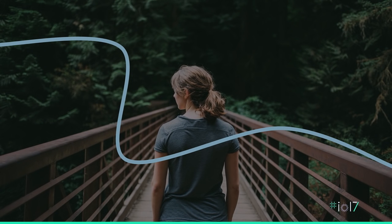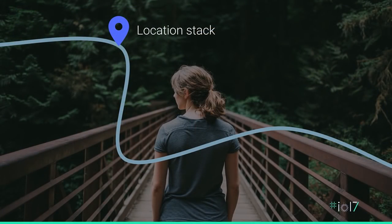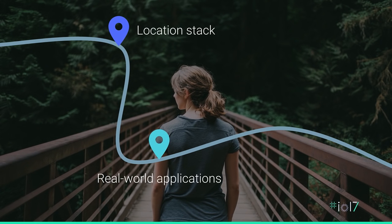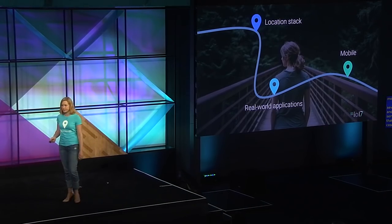I'll be taking you on a journey today in three different phases. The first phase is to explore what it means to be a place — we have a location stack with all different levels of metadata about a place. Second, we'll explore several real-world applications and the corresponding services within the Places API. And finally, I'll talk through how this is best accomplished through our mobile SDKs.